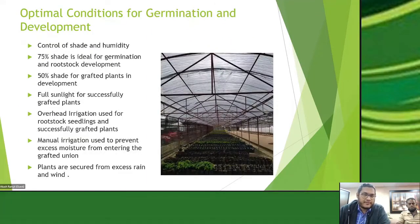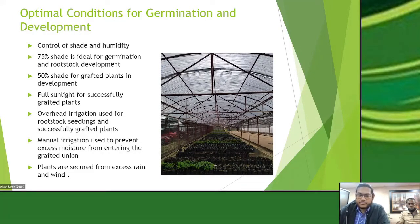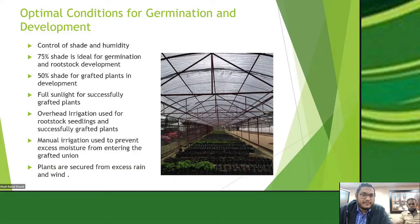Once the bags are prepared and the seeds are clean, we ensure the seeds are in an adequate environment for germination and development. We create an environment where we can control shade and humidity using shade cloth over the area where the plants are kept. We start the plants at 75% shade — meaning only 25% of sunlight is allowed to reach the plant during the germination stage.